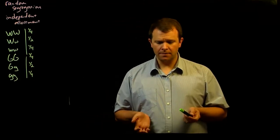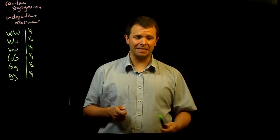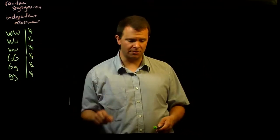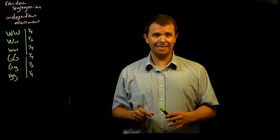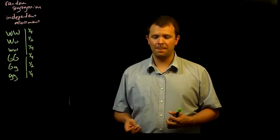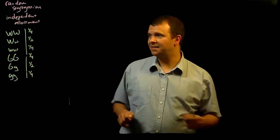Now, because these two genes assort independently, which alleles any particular seed receives for W are independent of the alleles that it receives for G. And so we can represent these two events like this.